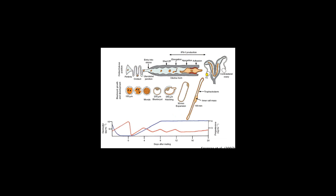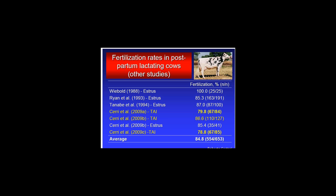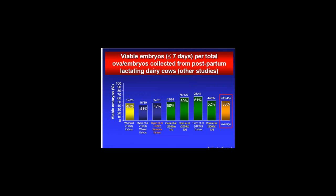Following ovulation, the oocyte enters the oviduct where fertilization takes place. The resulting embryo enters the uterus on around day 4 in cattle, hatches from its shell — the zona pellucida — on around day 8, and subsequently undergoes a process of elongation characteristic of ruminant embryos. The elongating conceptus produces copious amounts of interferon tau, which is the maternal recognition of pregnancy signal in ruminants, preventing luteolysis and maintaining the pregnancy. Fertilization rates in cows are quite high — around 85% — however, seven days later almost 50% of embryos had died, with only 53% remaining viable, indicating that early embryonic mortality is a contributing factor to infertility.